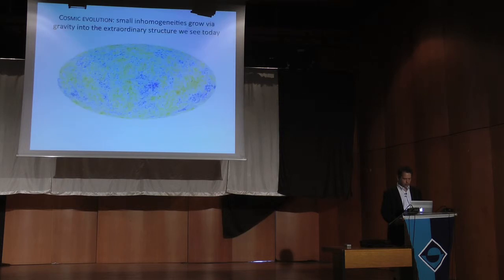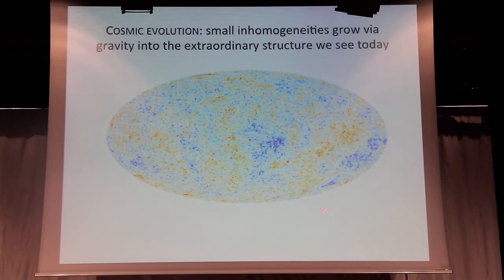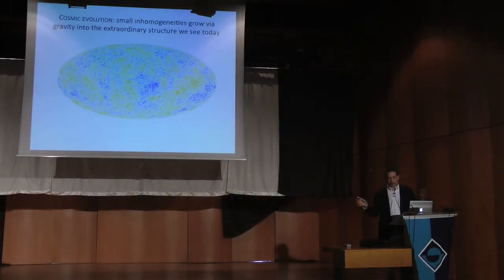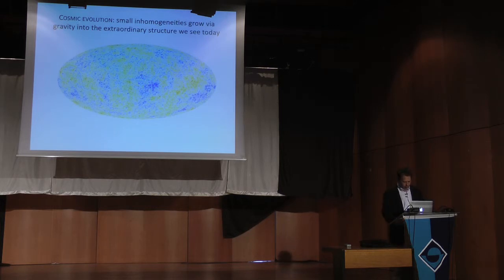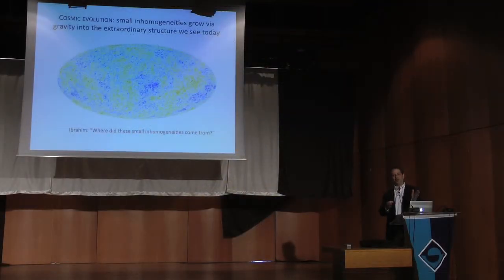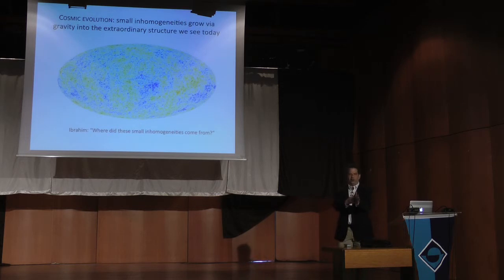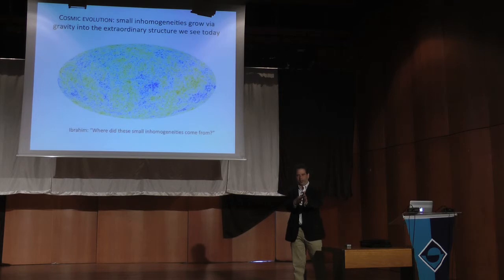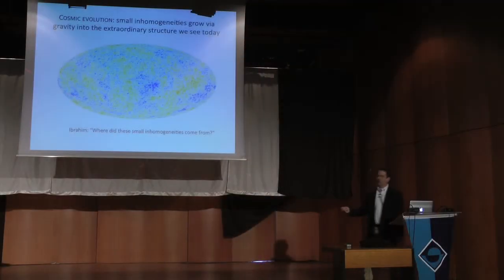I want to come back to something we started with: this map, and the notion that these small inhomogeneities grew via gravity into extraordinary structure. Then Earth picked it up, and we've seen the richness of life that emerged — and really it all started from this. Ibrahim asked after class: where did these inhomogeneities come from? In some ways we've answered the question — small inhomogeneities grow via gravity, cool, form stars, form heavy elements in stellar cores, those elements end up on later planets, and those elements form single-cellular, multicellular, and eventually us. But we've never addressed where these initial inhomogeneities came from.